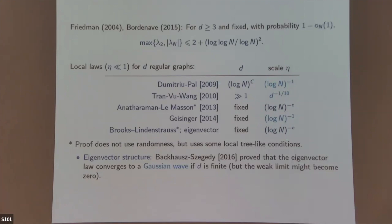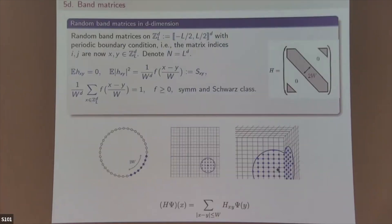Now the random band matrix. This is a problem I encountered as a postdoc — both Tom Spencer and Michael Aizenman asked me to work on it. It has been in my mind for more than 25 years. The difference between band matrices and regular matrices: in a regular matrix you only consider index i and j, but now you think of the matrix index i and j as a lattice site on a d-dimensional lattice.